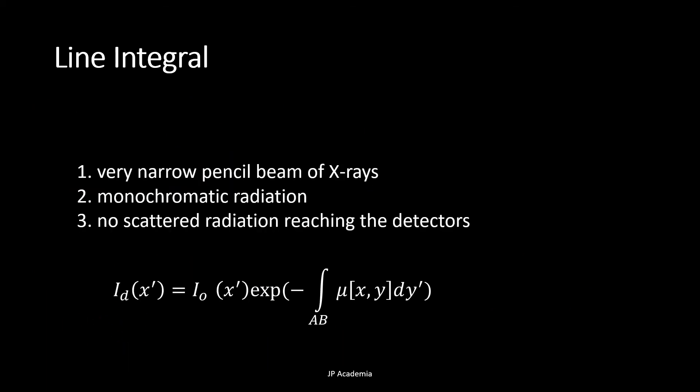Therefore, we have a line integral. A line integral is an integral where the function to be integrated is evaluated along a certain curve or path. The data needed to reconstruct the image or transmission measurements through the patient. So we need to know I sub D, given that we also know the initial intensity I sub naught during the air calibration.